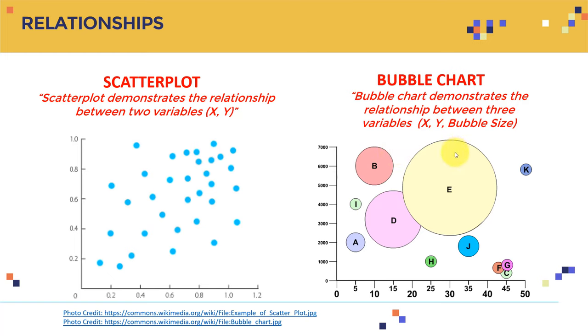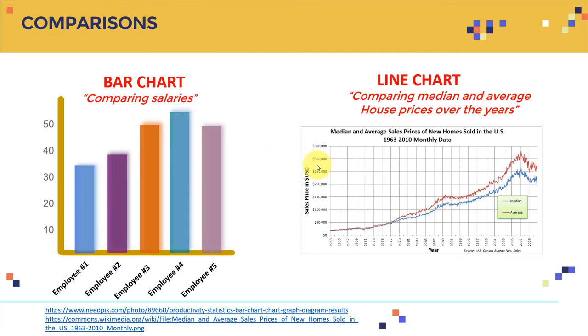So again, that's another way of visualizing the relationships between variables. So now I have scatter plot and I have bubble plot, and these belong to relationships. The next one is comparison.